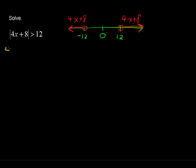You have 4x plus 8 is less than negative 12. Or you have the other scenario where 4x plus 8 is greater than positive 12, 12 units from 0. And yeah, this will set up two solutions, but that's okay. That's what we want. So here we're going to solve these equations.